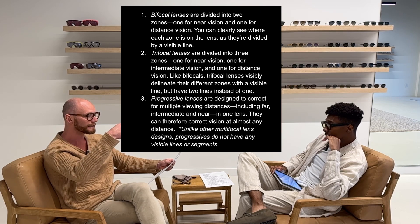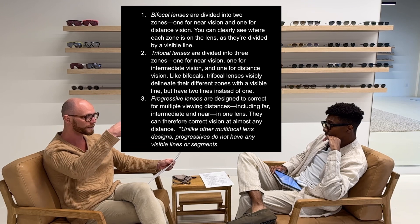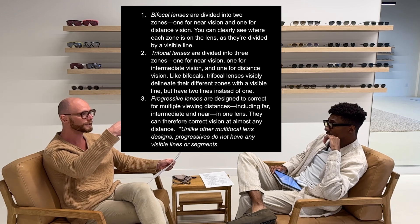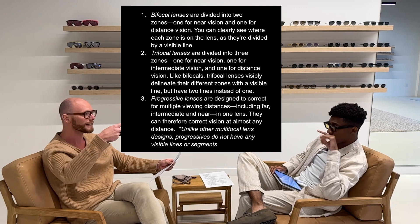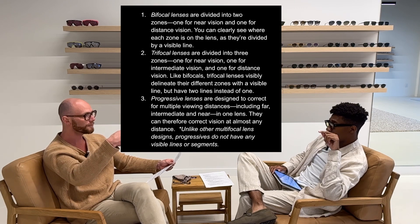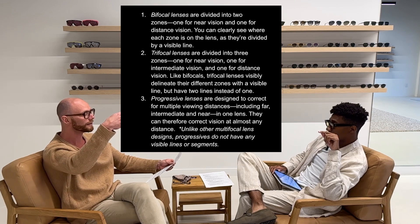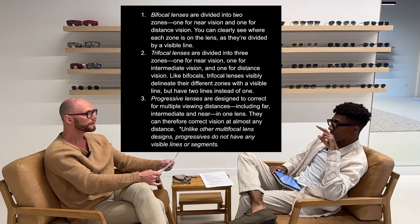It's kind of like a progressive, but they have lines. The trifocal has three focal points, but they're all lined. The bifocal is two focal points with one line — above the line and below. And the trifocal would have two lines, because that creates three focal points.